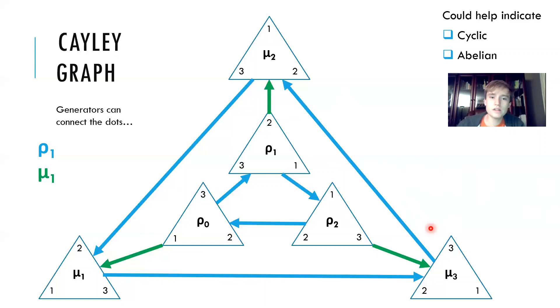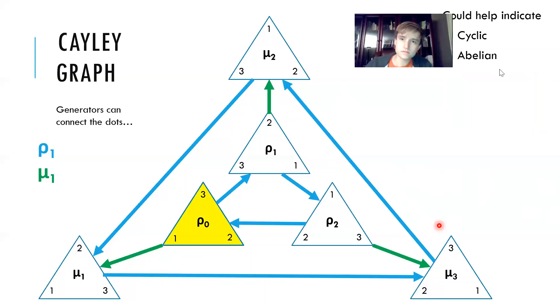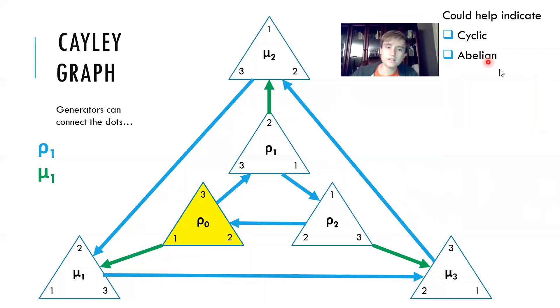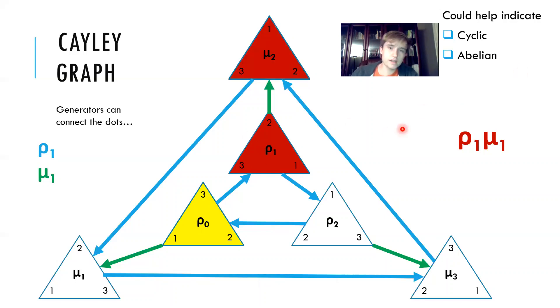We can also see that this is not abelian. Say we started at rho naught and we wanted to perform the operation rho one mu one. The first operation rho one would end us up at rho one, and then the second operation mu one would end us up at mu two.